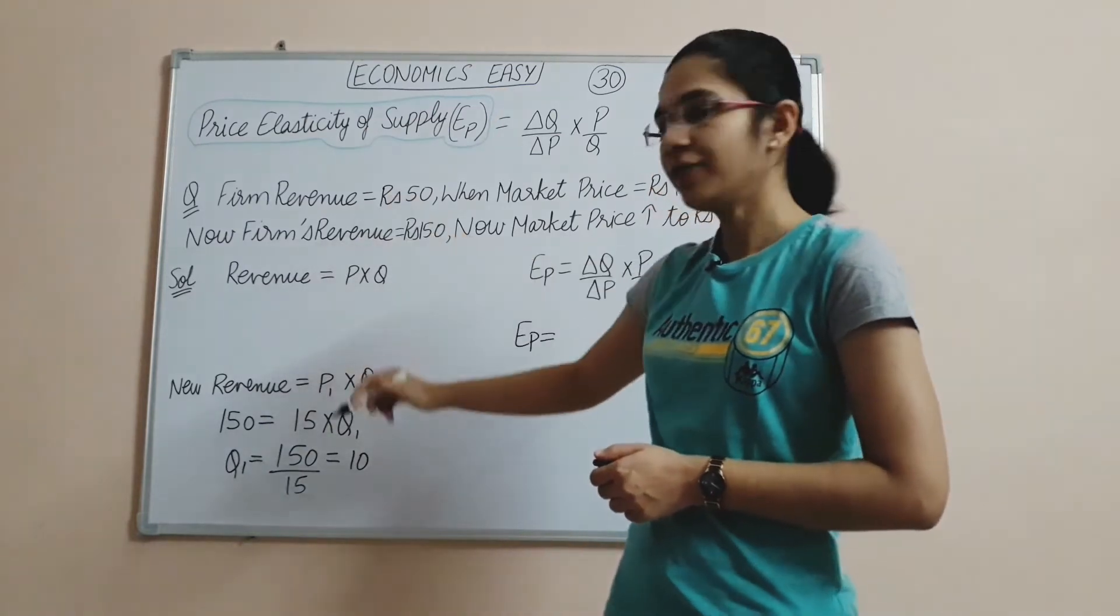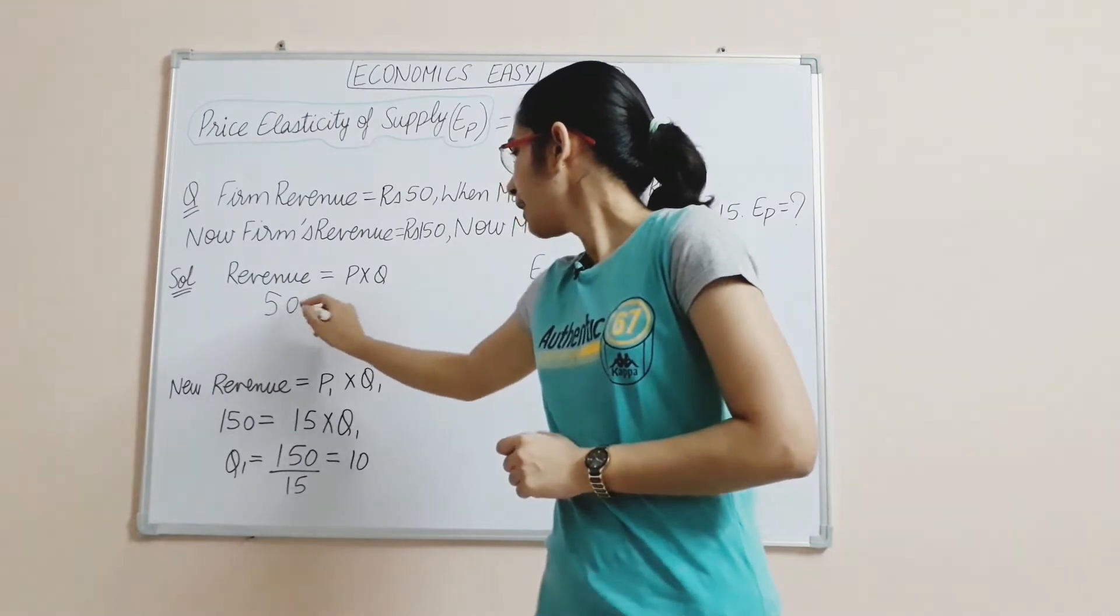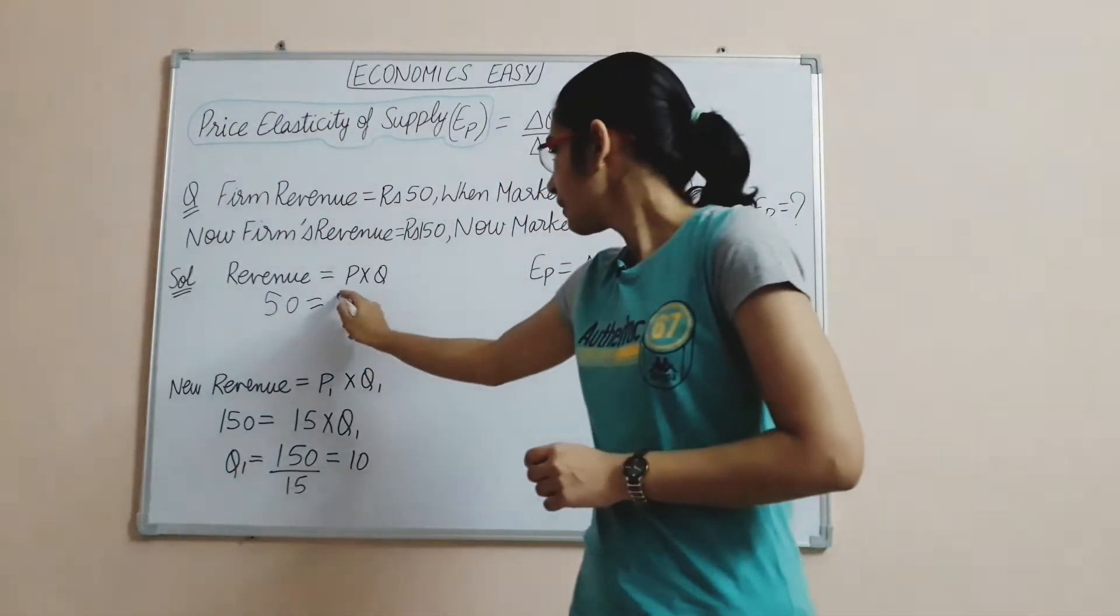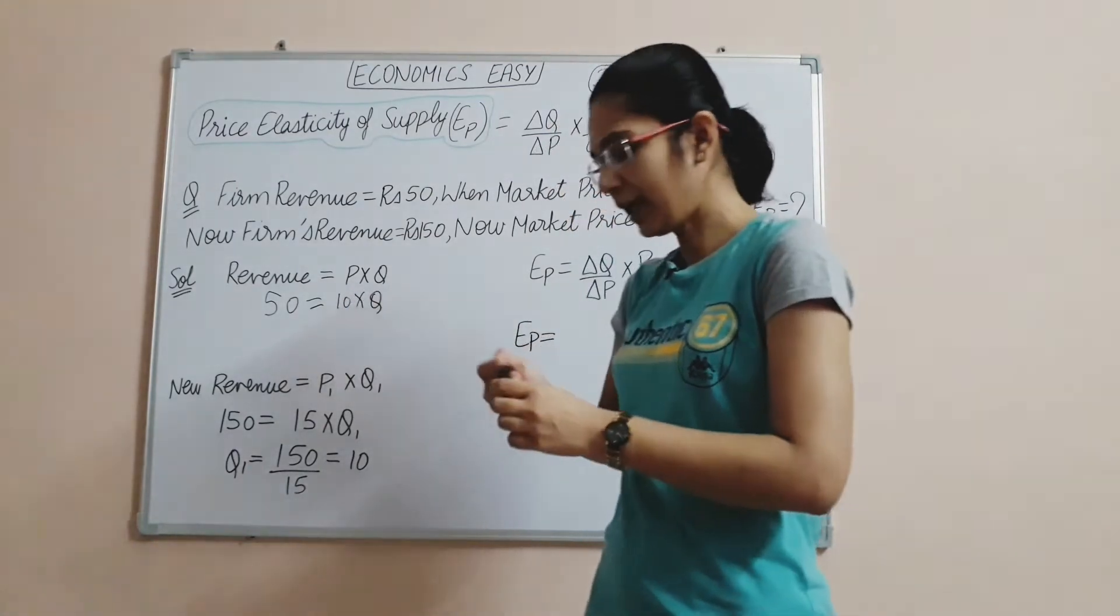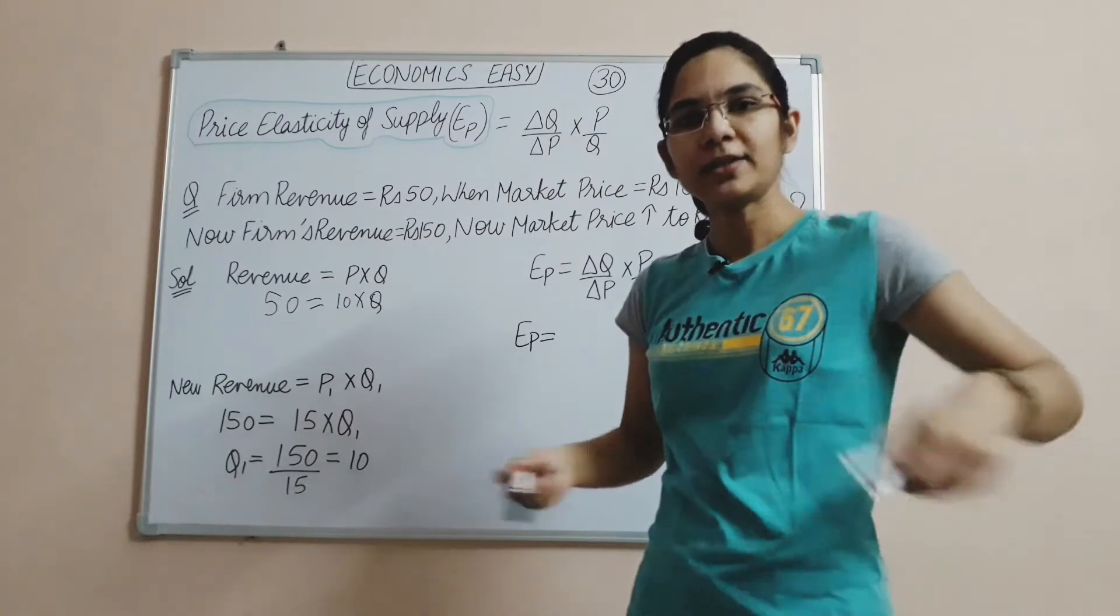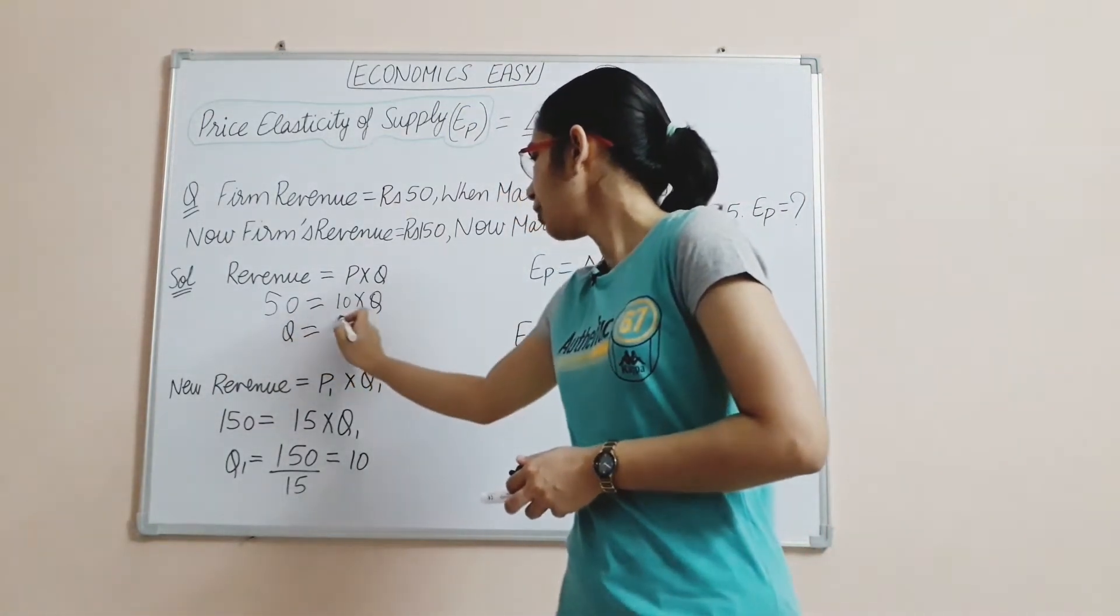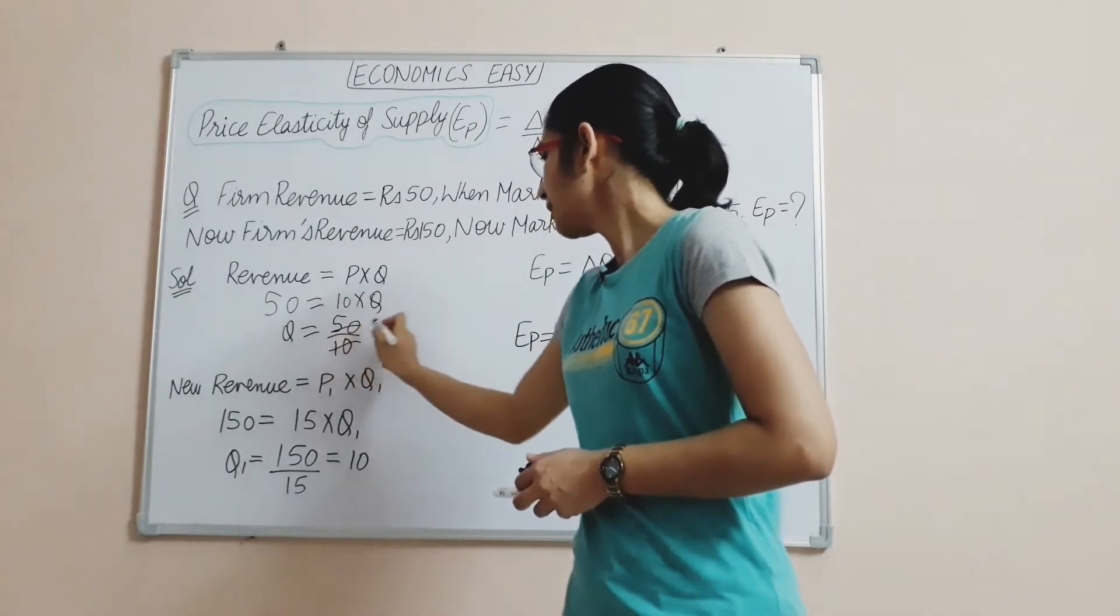The revenue formula we have learned is price times quantity. In the first case, we will do it very easily. Revenue is 50, that's the original value. Price is 10, original value. So 10 times quantity. We can find quantity easily with simple math. I have done 50 upon 10, which equals 5. This is my original quantity.